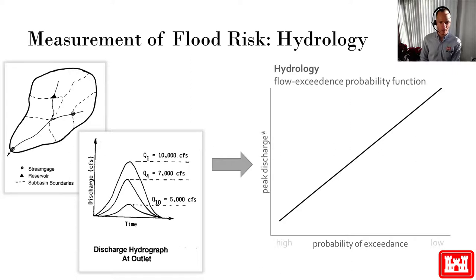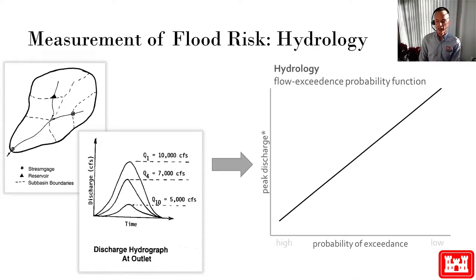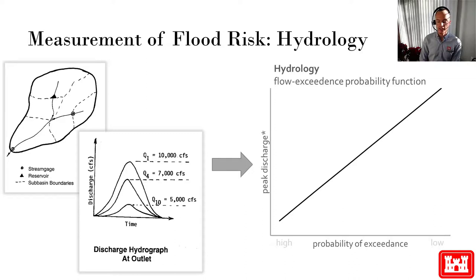The other unique thing about this diagram is that the x-axis is in reverse order, so that the graph is upward sloping with lower probabilities on the far end of the axis. So a flow with a 50% chance of exceedance in any given year, or about a two-year storm, has a low flow associated with it. And a flow that is only surpassed in 1% of years, or a 100-year storm, has a large flow associated with it.